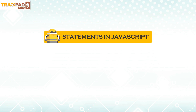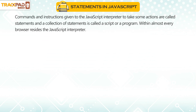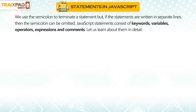Statements in JavaScript are commands and instructions given to the JavaScript interpreter to take some actions. A collection of statements is called a script or a program. Within almost every browser resides the JavaScript interpreter. We use the semicolon to terminate a statement, but if the statements are written in separate lines, then the semicolon can be omitted.